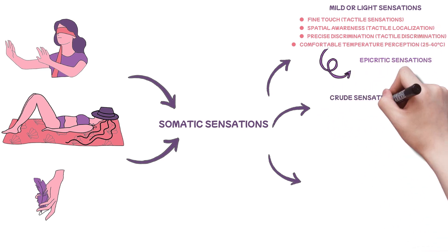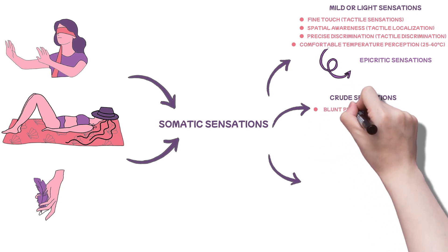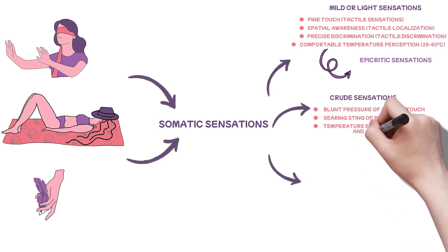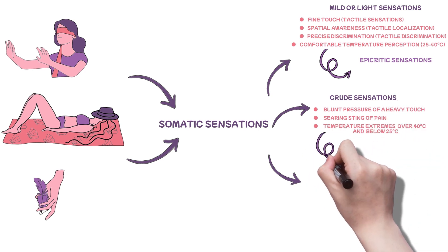The second category is crude sensations. These include the blunt pressure of a heavy touch, the searing sting of pain, and temperature extremes far from our comfort zone (above 40 degrees Celsius and below 25 degrees Celsius). These are the protopathic sensations, and they are primitive in nature.